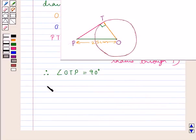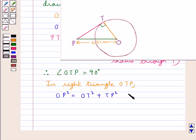Let us now consider the right triangle OTP. In this, OP² = OT² + TP² using the Pythagoras theorem.